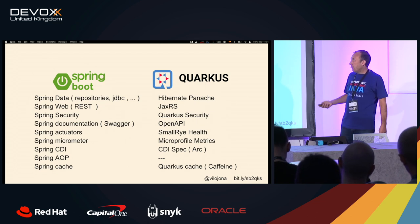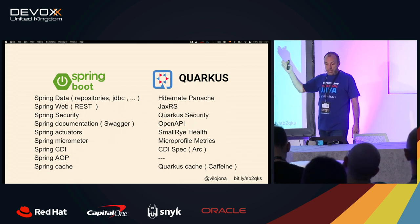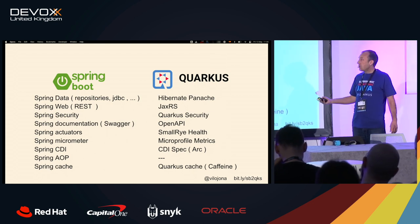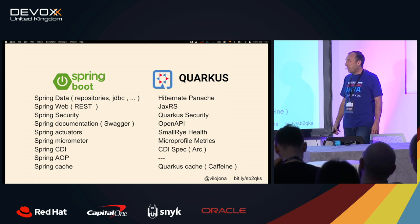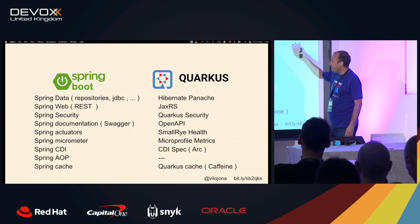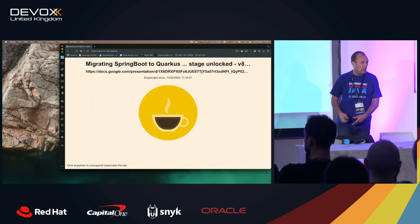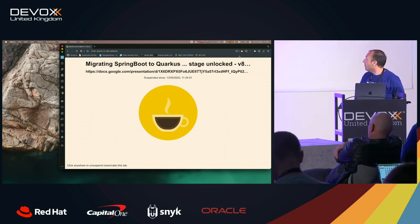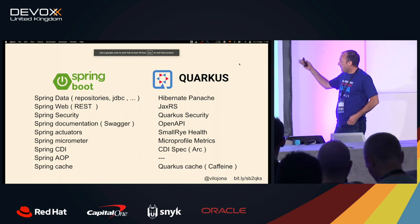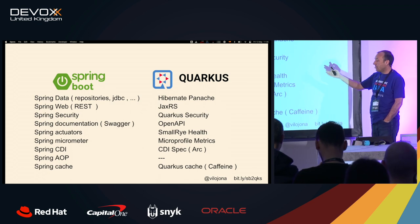So I decided to check it. These are the libraries in this Spring Boot project — the Spring Pet Clinic REST. I took this one because I thought these are the most common libraries: Spring Data, Web Security, Swagger, CDI, whatever. I said okay, let's move to the Quarkus one. And here you can see the Quarkus libraries: Hibernate, JAX-RS, OpenAPI, SmallRye, MicroProfile, CDI — common libraries.